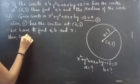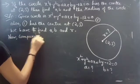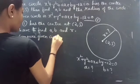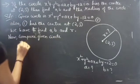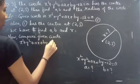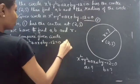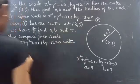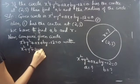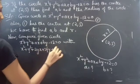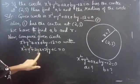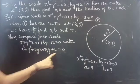Now compare the given circle equation x² + y² + ax + by - 12 = 0 with the standard equation of the circle x² + y² + 2gx + 2fy + c = 0. You can equate the coefficient of x, coefficient of y, and the constants.